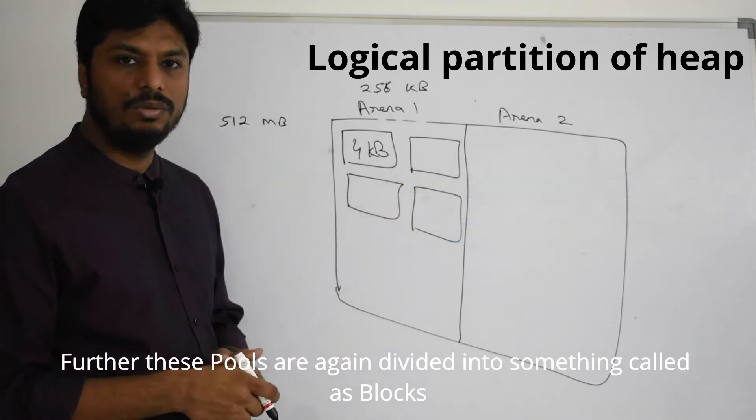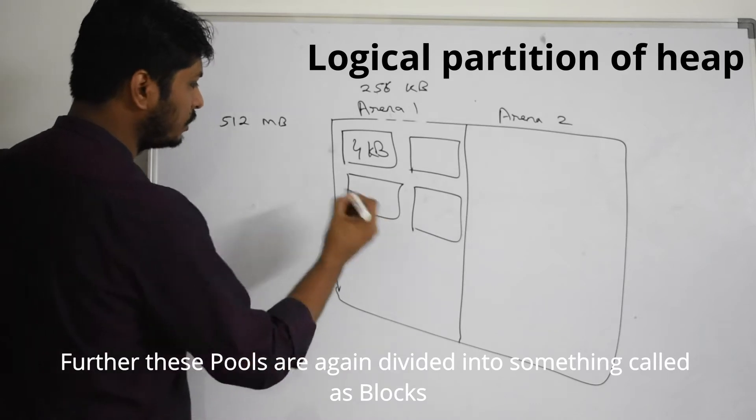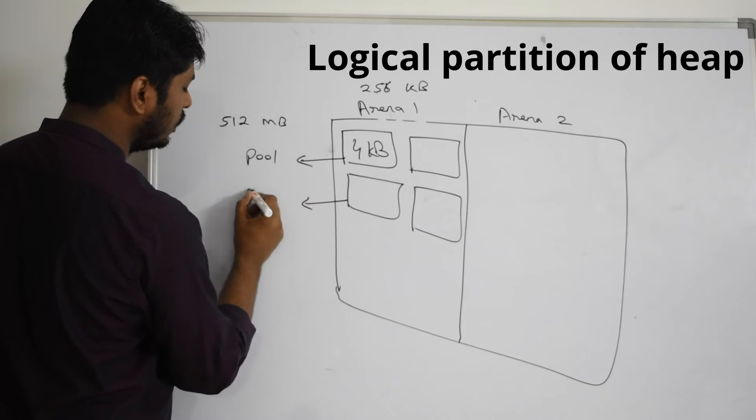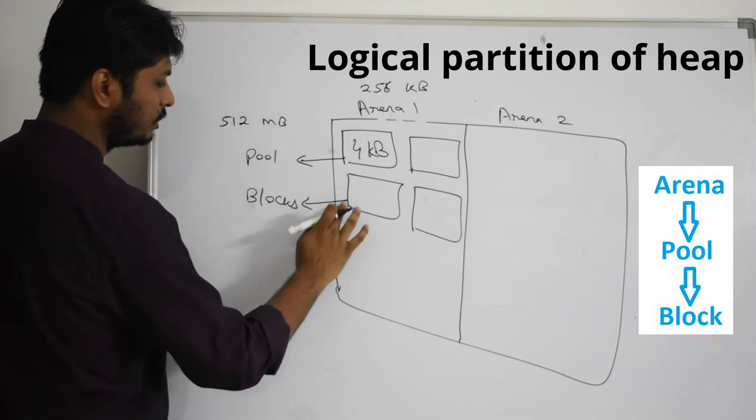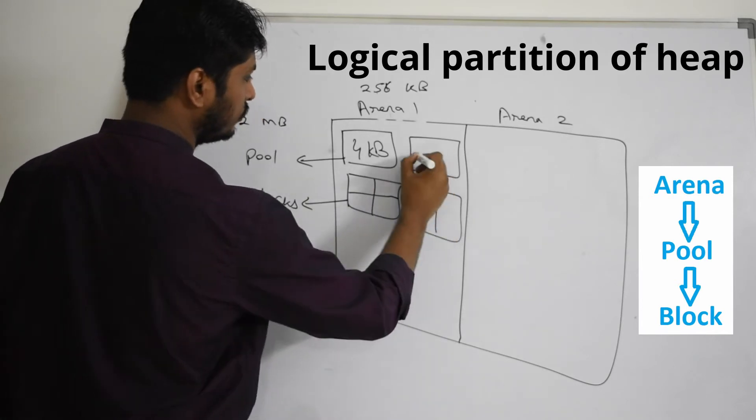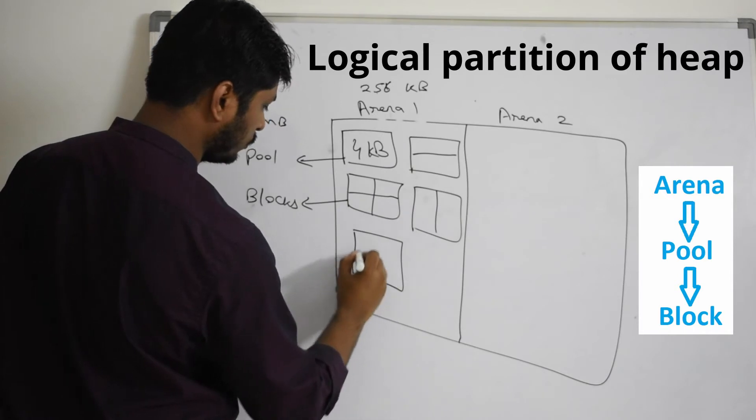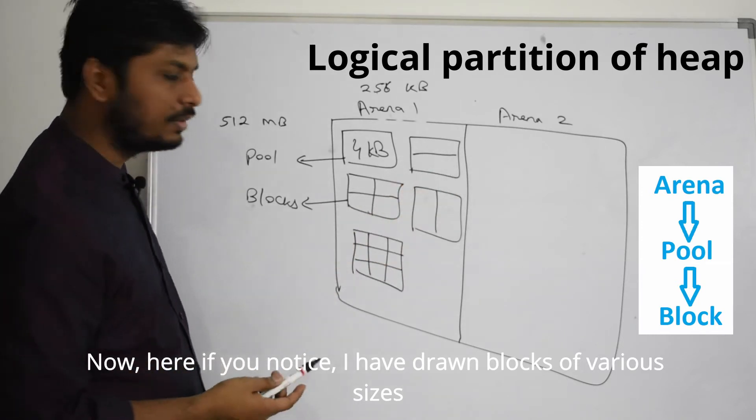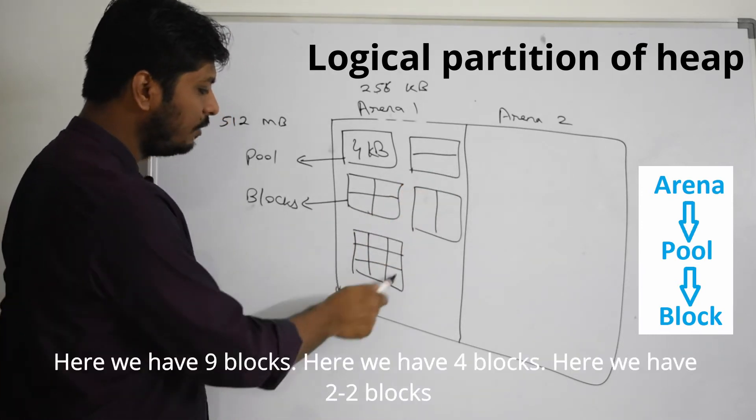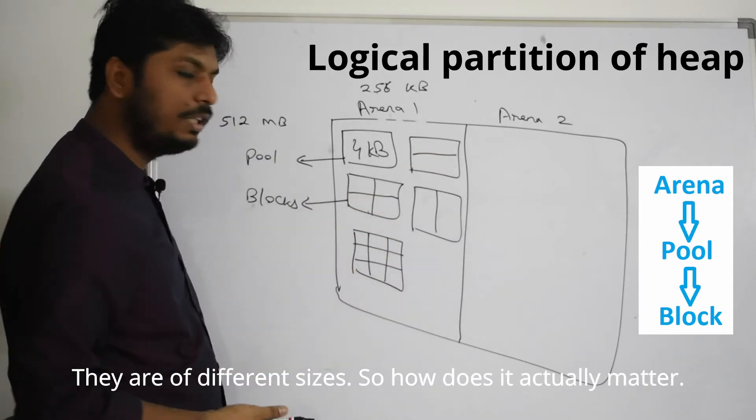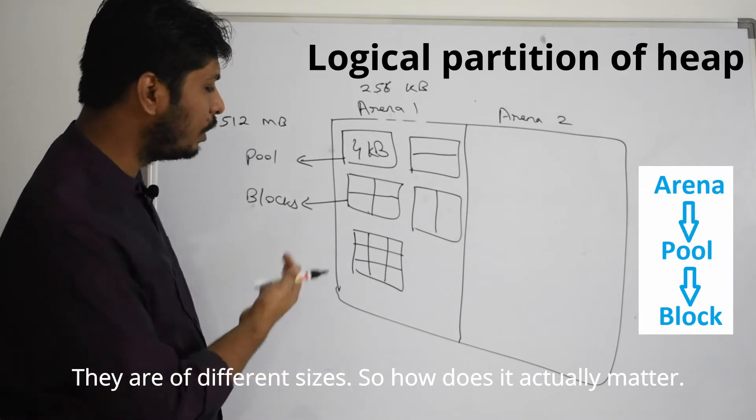Further these pools are again divided into something called blocks. These blocks are inside the pool. If you notice, I have drawn blocks of various sizes. Here we have like 9 blocks, here 4 blocks, here 22 blocks. They are of different sizes. How does it actually matter or what is it actually?